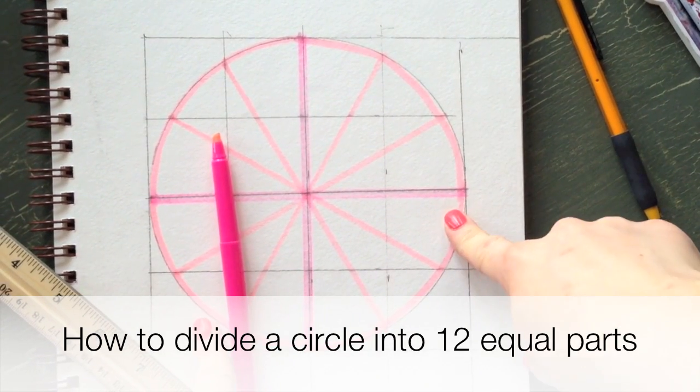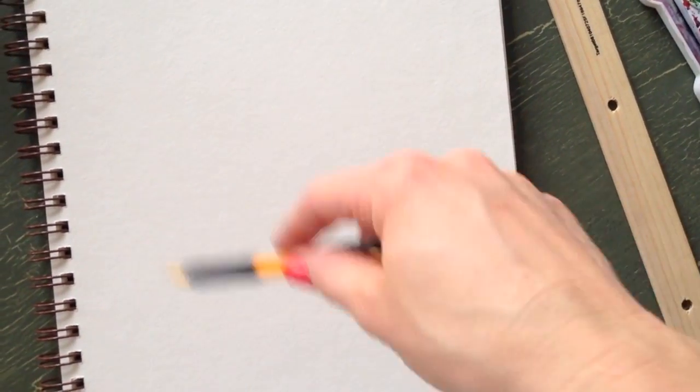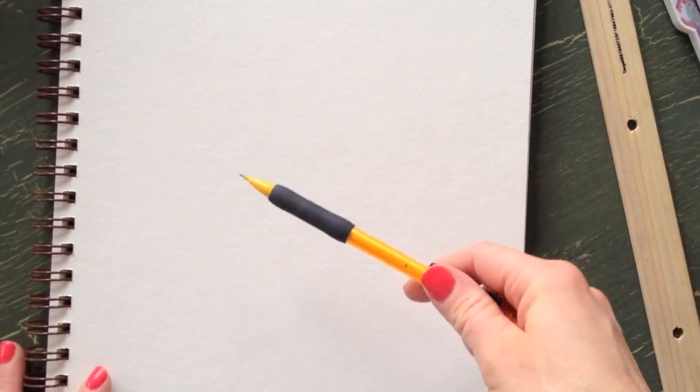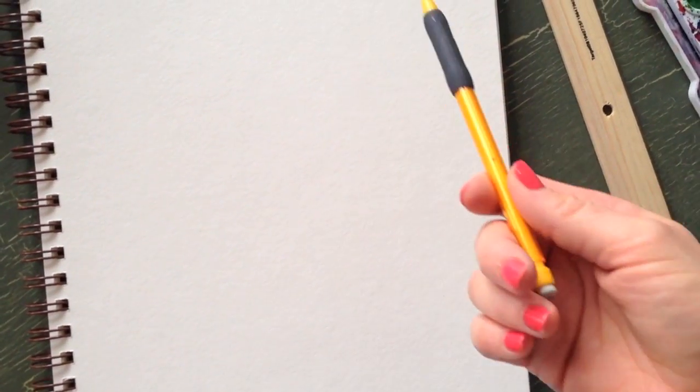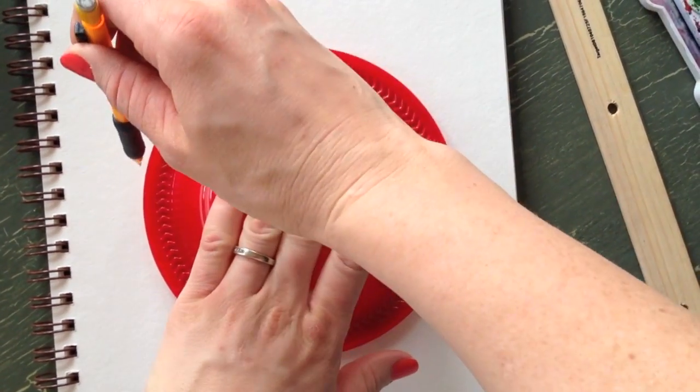How to divide a circle into 12 parts. For those of you who like your drawings to be more accurate and you don't just want to freehand the pie slices, here's a way you can get all 12 pie slices to be the same size. So you're just gonna trace your circle, whatever that might be.